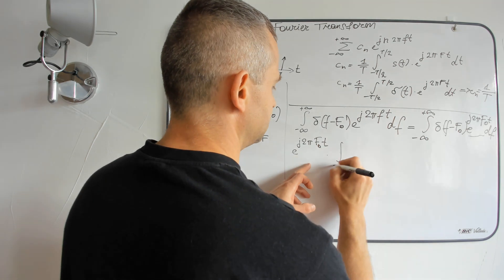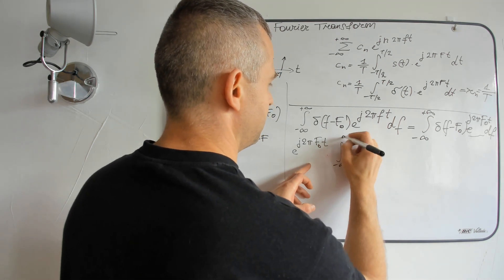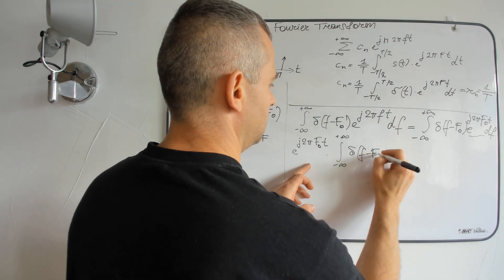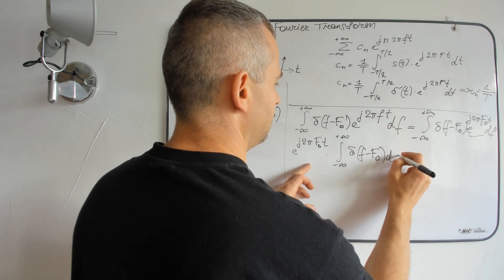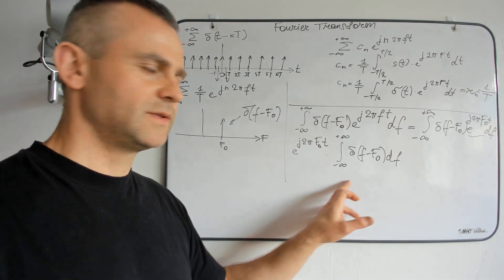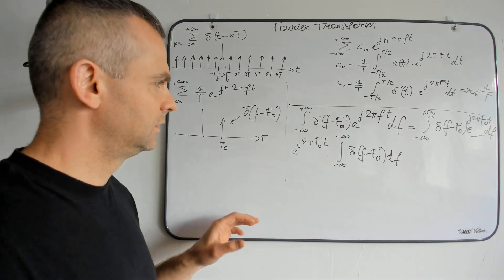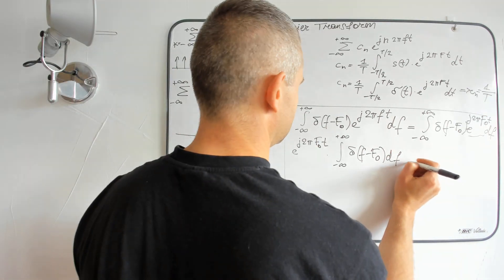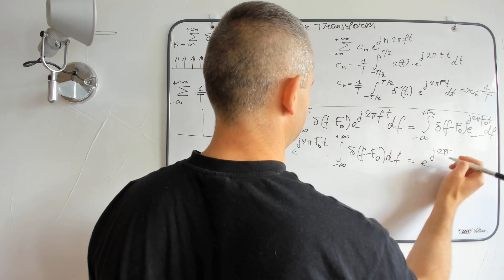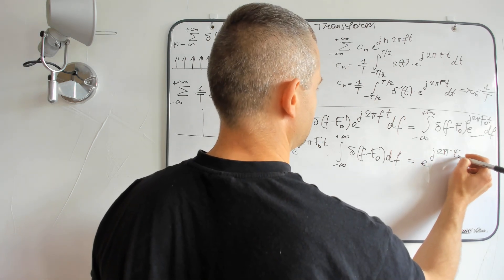And it multiplies the integral of delta function delayed. But the value of this integral is always 1. So, we got the value of exponential.